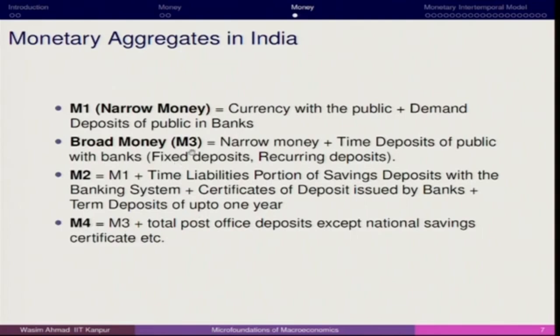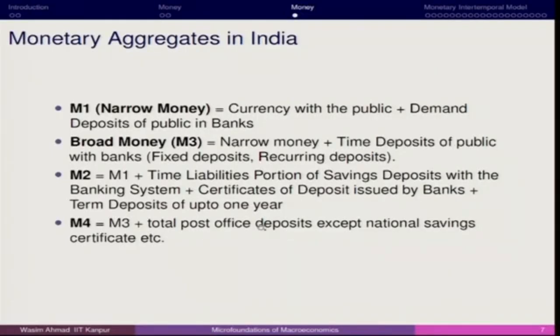M4 — as mentioned in government economic survey reports — includes total post office deposits except holdings of government bonds such as National Savings Certificates. NSCs have durations of 7 to 8 years and offer a coupon rate, so at maturity you receive principal plus the accumulated savings.